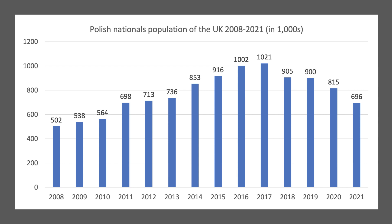The UK is now outside the European Union, so we no longer have free movement within the single market. There's been a fall in net EU migration into the UK, but it's partly been offset by an increase in non-EU migration into the UK.